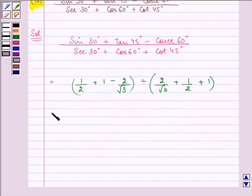Let's simplify, taking 2 root 3 as the LCM. We are left with root 3 plus 2 root 3 minus 4 in the numerator.